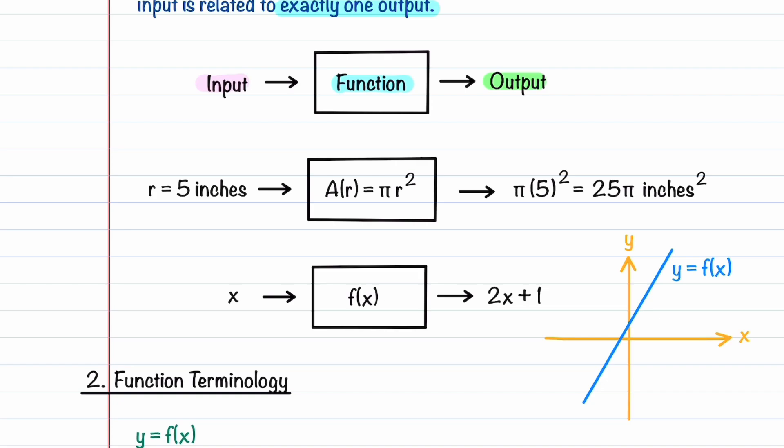For example, let's define a function for the area of a circle. When we have a radius of 5 inches and we plug it into our function, we get an area of 25 pi inches squared. For every radius, there is one unique area.